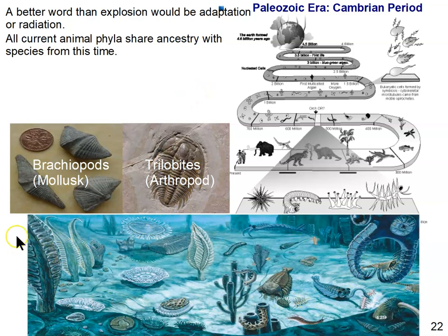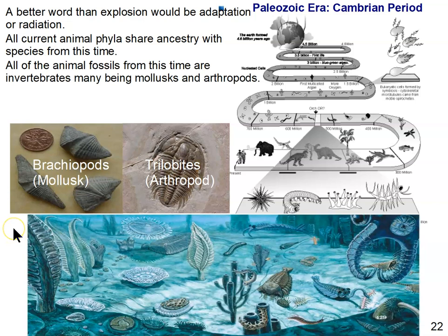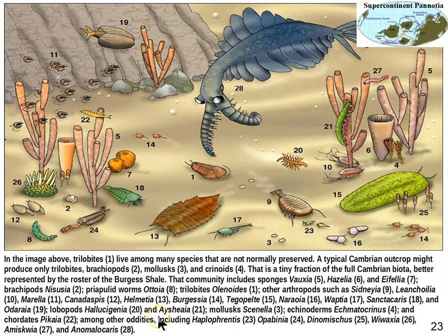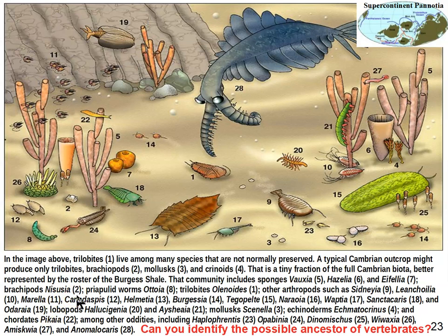All the Cambrian animals were invertebrates — there were no vertebrates back in the Cambrian. Molluscs and arthropods are primarily what we find in the fossil record, along with a wide variety of arthropods and echinoderms — represented by a sea urchin-like organism. The one to focus on in the next diagram is the possible ancestor of vertebrates and therefore the possible ancestor of us.